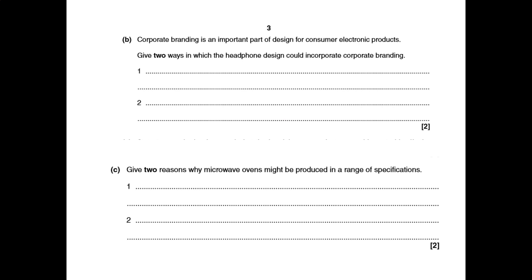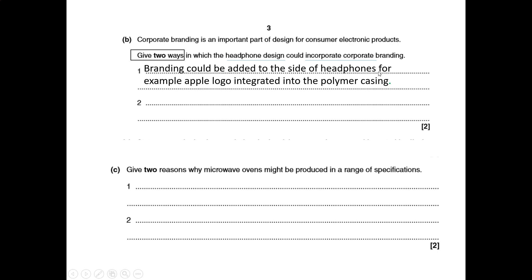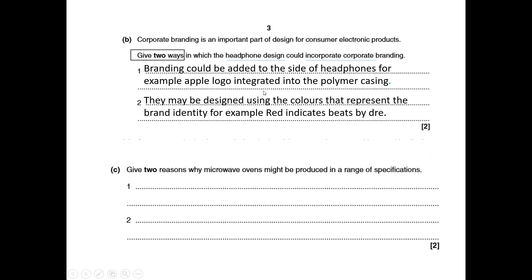Now we'll use the Get Busy method. Corporate branding is an important part of design for consumer electronic products. Give two ways in which the headphone design could incorporate corporate branding — worth two marks. Pause and attempt it first. My first answer: many headphone brands have a logo branded on the side, for example an Apple logo integrated into the polymer casing. My second answer: the headphones could be designed using colours that represent brand identity — for example, red indicates Beats by Dre.